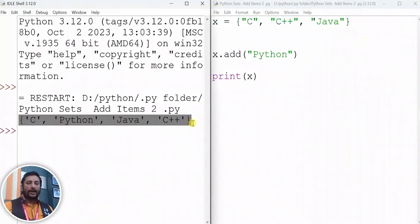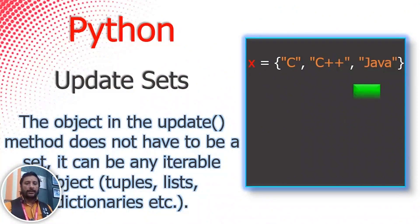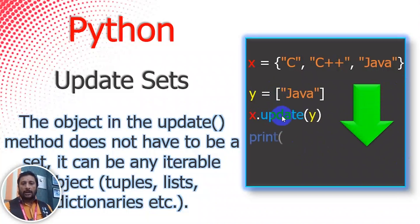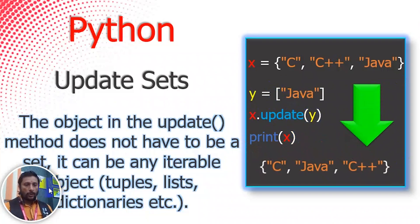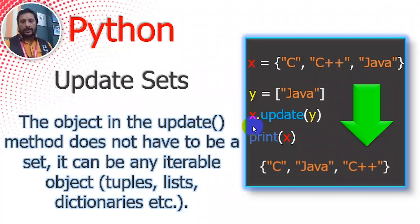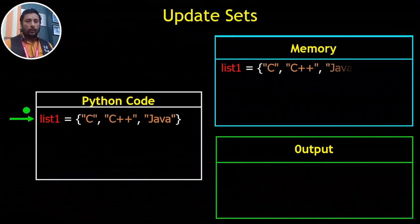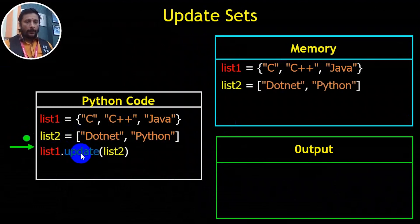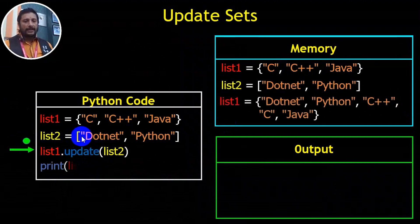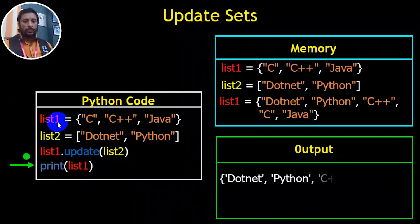Now we can also update a set using the update() method. We have a set, and we have a list in Java. You can call x.update(y) to add all items from the list into the set. We can add items like C, C++, and Java from a list into the set using update().